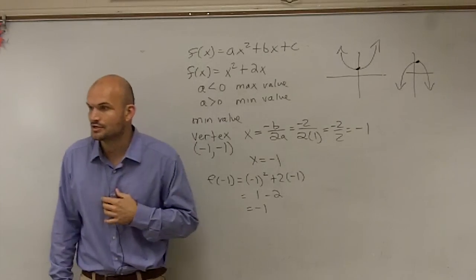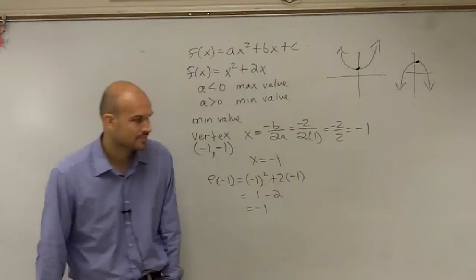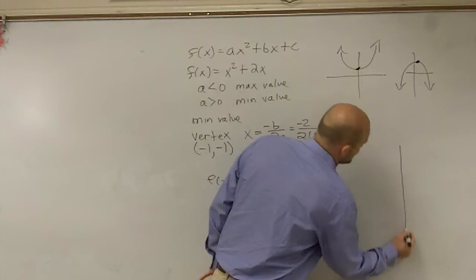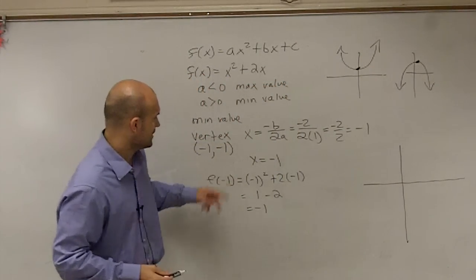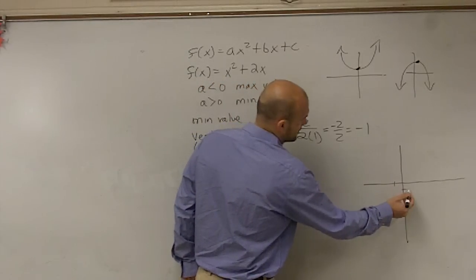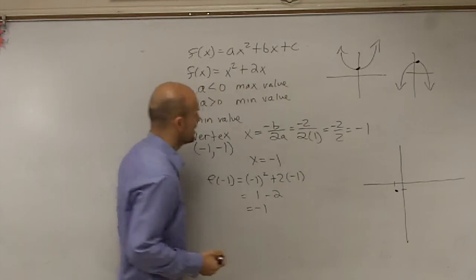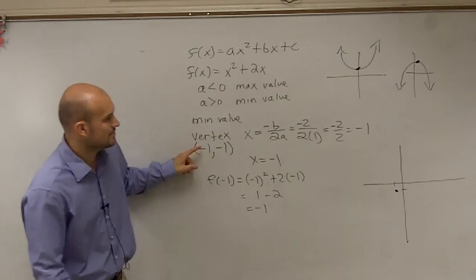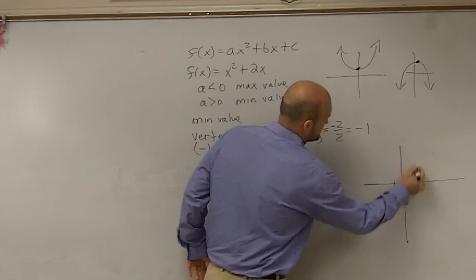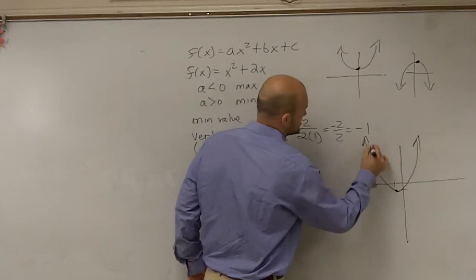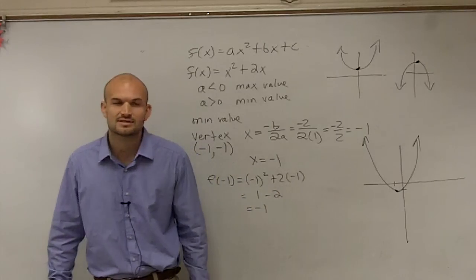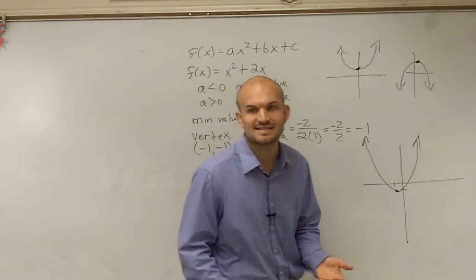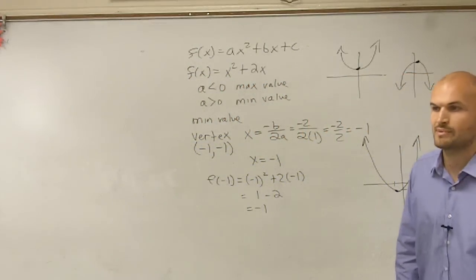And then the next thing I need to do is I need to determine the domain and range. So let's, to get an idea of domain and range, let's go ahead and plot what this graph would look like. If I go to negative 1, negative 1, that's going to be right there. I know that this is going to be a minimum value. So therefore, my graph is going to do something like this. All right? I'm just sketching the graph. I know it's not going to be exact, but I'm just going to sketch the graph to hopefully give you guys an idea of how you can determine what the domain and range are.